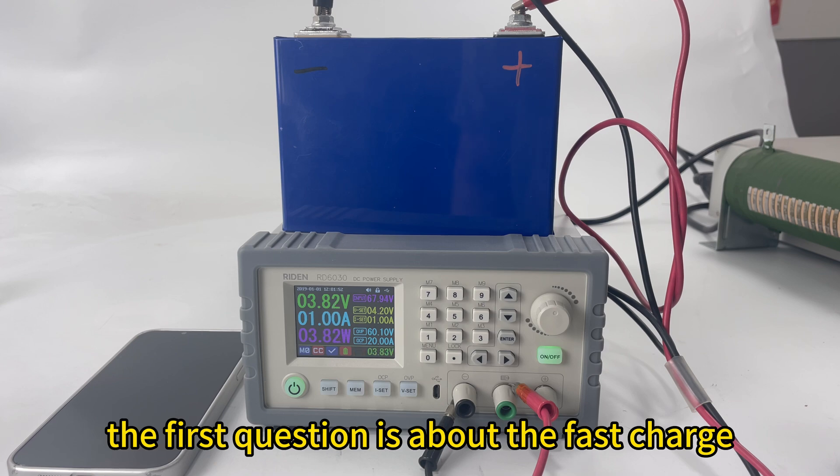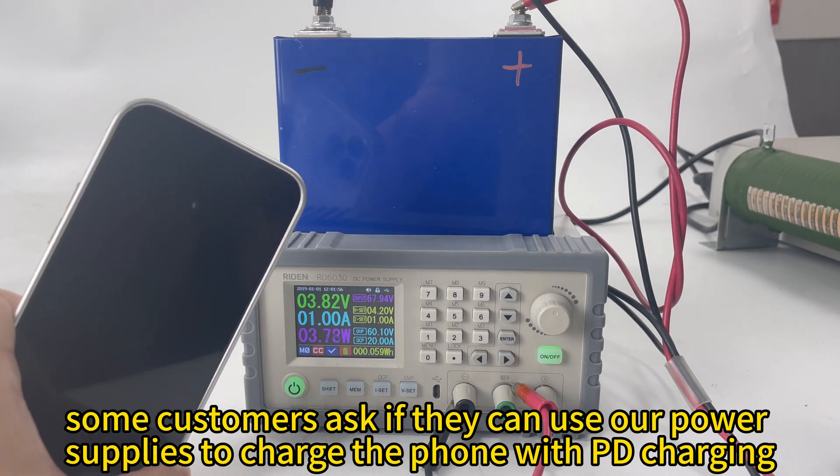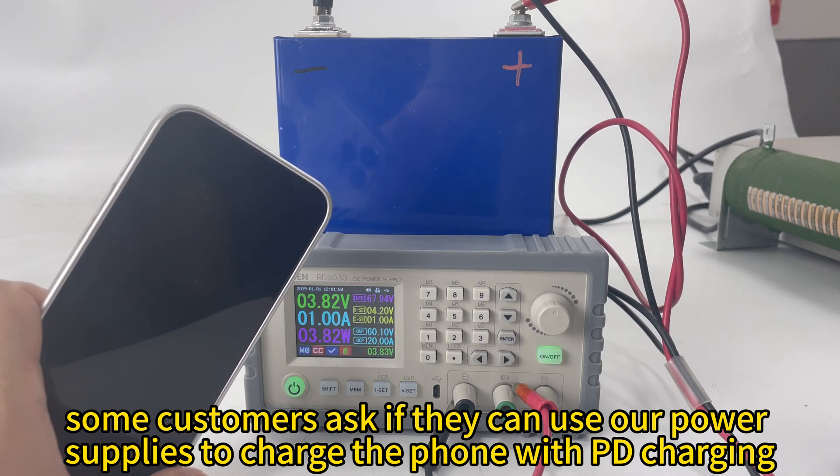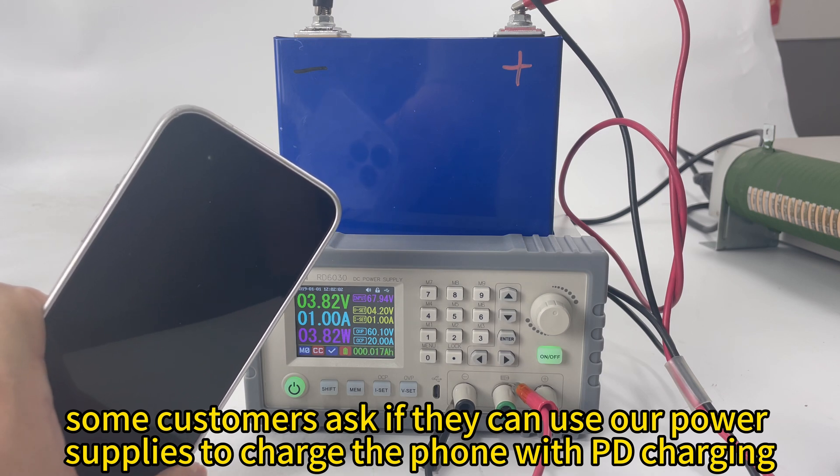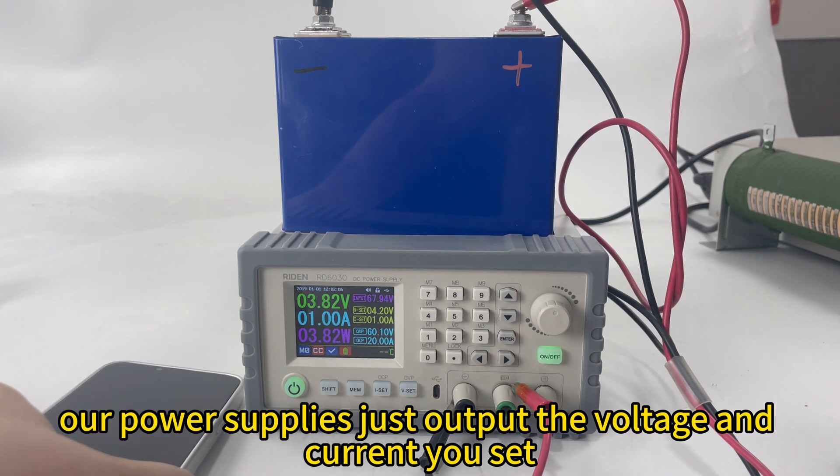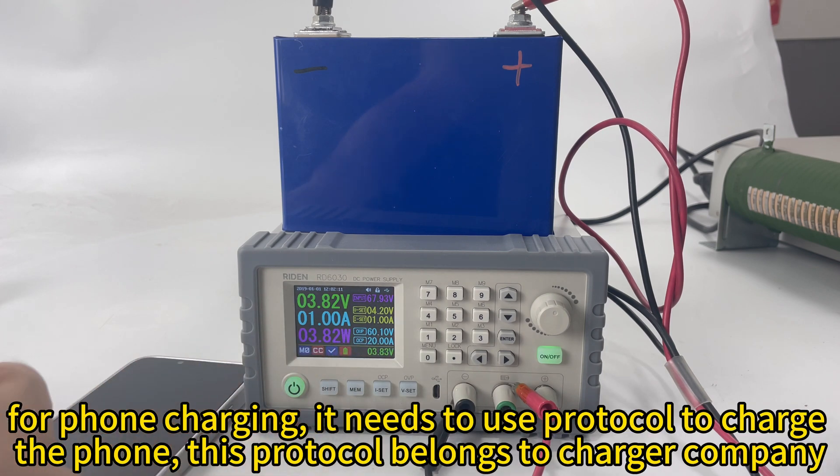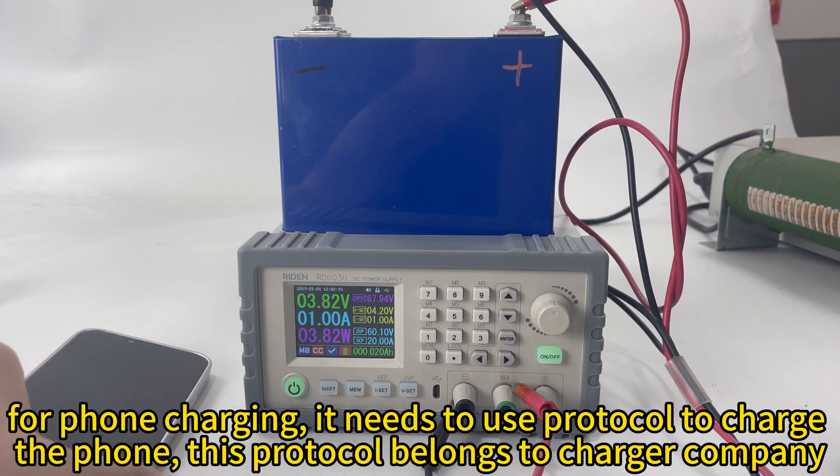The first one is fast charge. Some customers have questions that if I can use your power supply to charge the phone with fast charge like PD charging, fast charging. Actually, our power supply just outputs the voltage and current you set. The phone charging, it needs some protocol. This protocol is made by the charger and phone company.